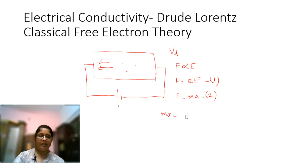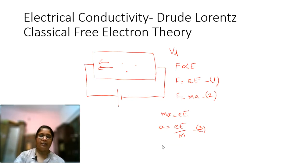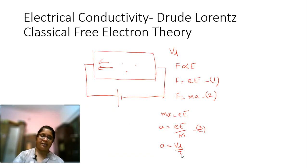So, mA is equal to eE, or acceleration a is equal to eE divided by m. This is equation 3. Now we will talk about drift velocity. Acceleration is velocity divided by time, so a is equal to Vd divided by tau. Tau here is the relaxation time.